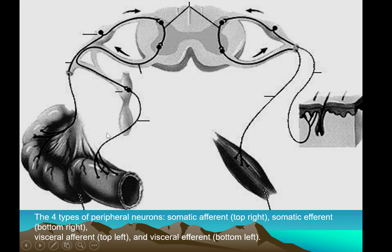So there are four types: visceral afferent, visceral efferent, somatic afferent, and somatic efferent. Remember, the visceral efferent pathway is composed of two neurons, while the somatic efferent has only one motor neuron.